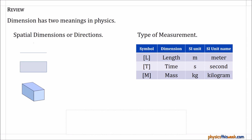As a review, remember dimension has two meanings in physics. You have your spatial dimensions or your directions, and most of the time in physics we will use two dimensions at once, usually denote those by x and y. We can also use it as a type of measurement, and that's what the other meaning of dimension.